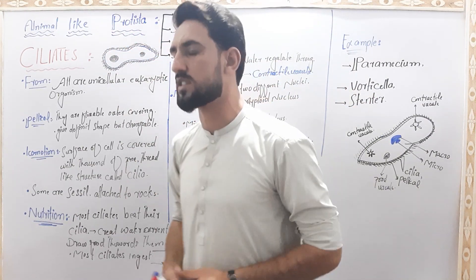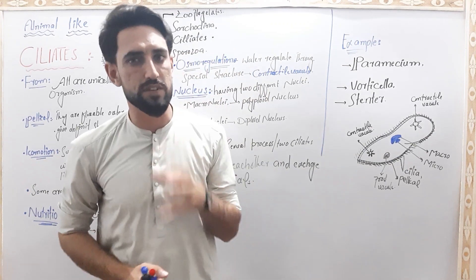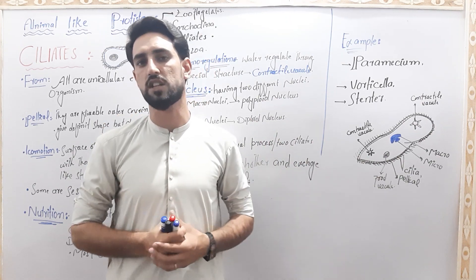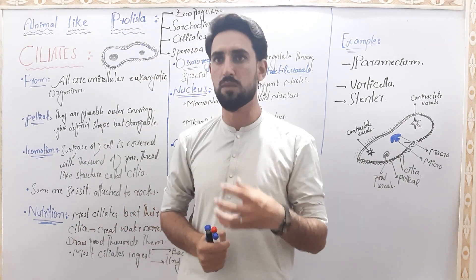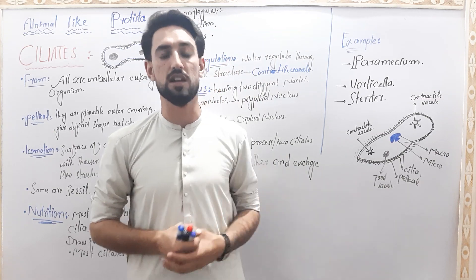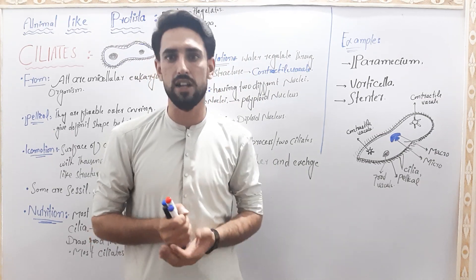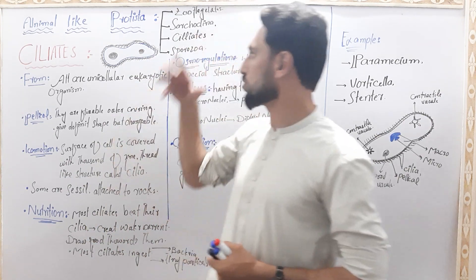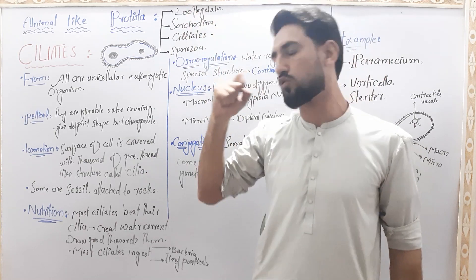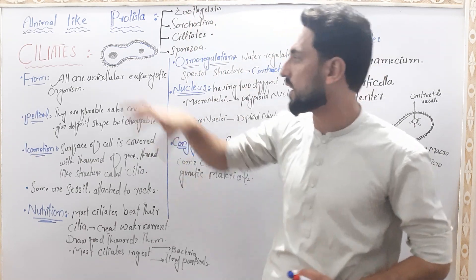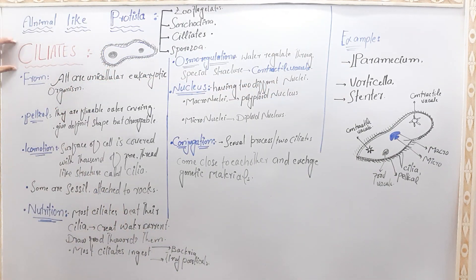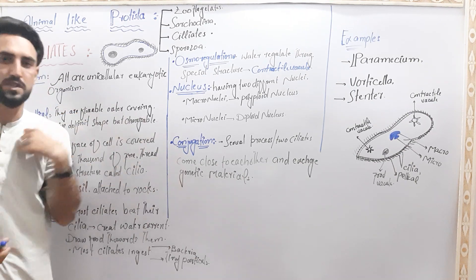In the previous lecture we discussed about protists and the other characteristics of the animal-like protists, plant-like protists, and fungi-like protists. The first group we started with was the animal-like protists. The ciliates are the first classification of the animal-like protists, and we discussed the division of the group.